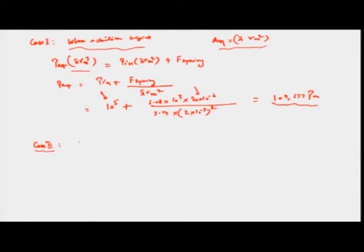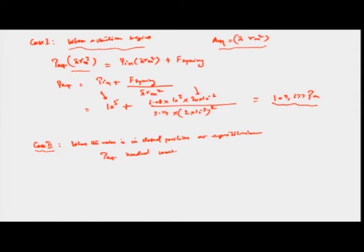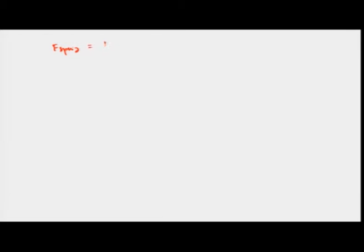In case 2, at equilibrium when the valve is in the closed position, the P_actuation needed would be much lesser. The spring force is K × 20×10⁻⁶, and the actuation force times the total membrane area equals the total inlet pressure times the inlet area — which is only 0.1 mm radius in this case.